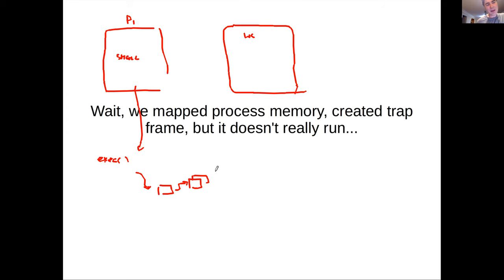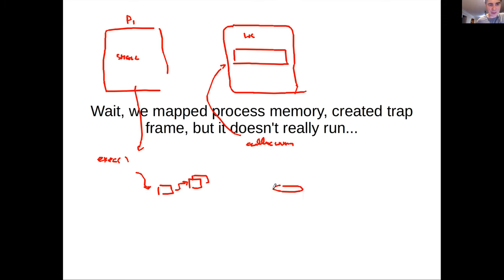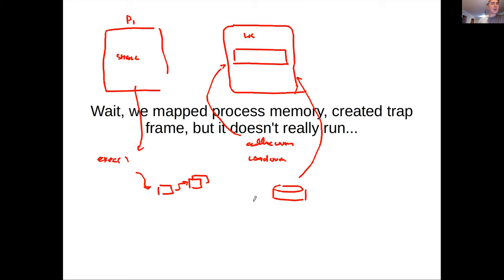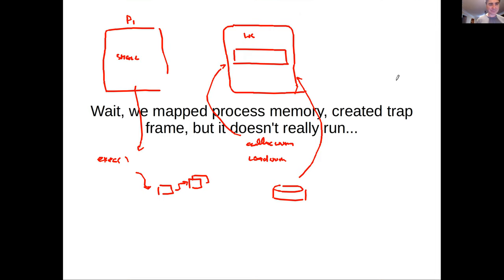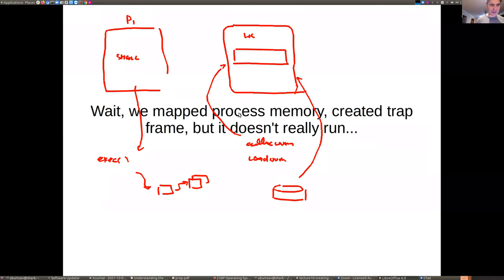It's the same process. What we did is: we allocated memory page by page using the allocuvm function, then loaded the data from disk into this memory with loaduvm, which loaded bits of the ELF file. Then we said okay, now we're ready to run. But how did we run the process? How did we exit into this process?